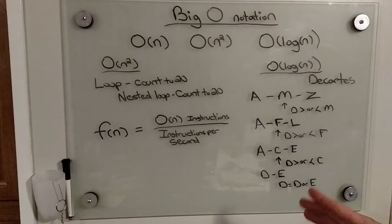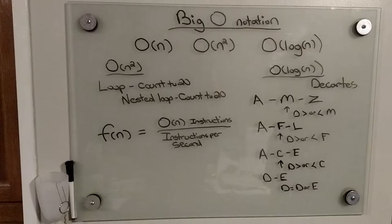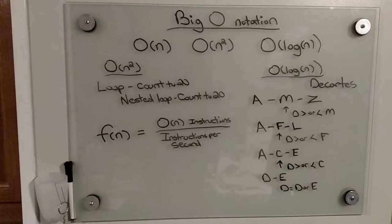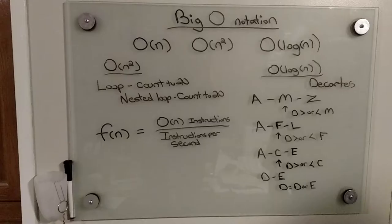So we have A through L, which our midpoint is F, and it compares D being greater than or less than F, which we know again is less than F. And so again, it takes all the letters before F because the ones after that don't matter anymore.